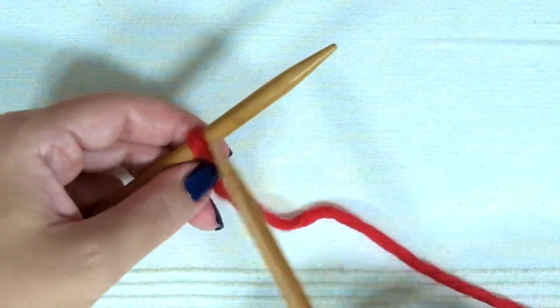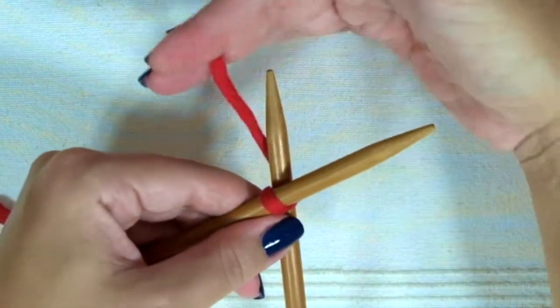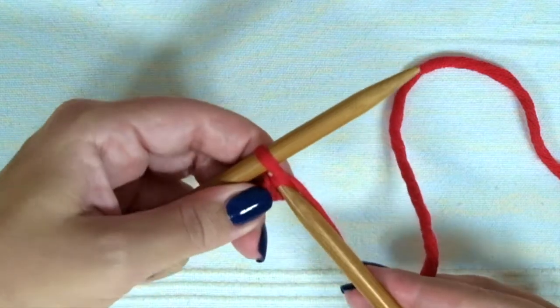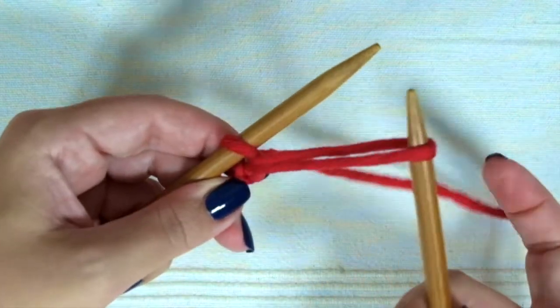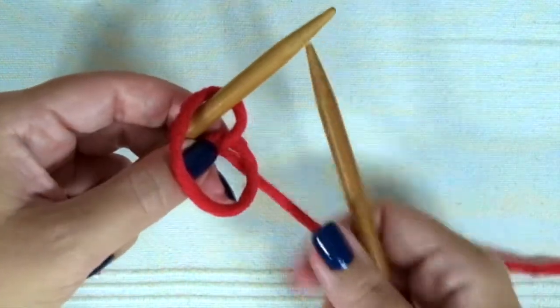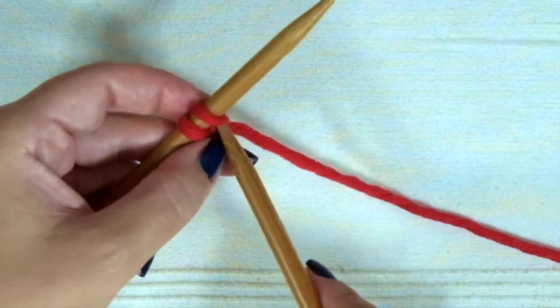Grab your second needle, put it through this first stitch, wrap the yarn around the right needle, and put it through this stitch. Pull it through the stitch, twist it, and put it onto the left needle. Repeat.